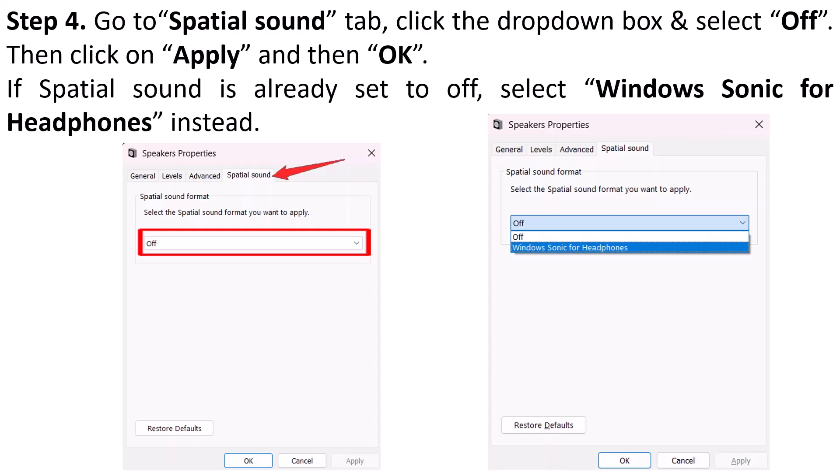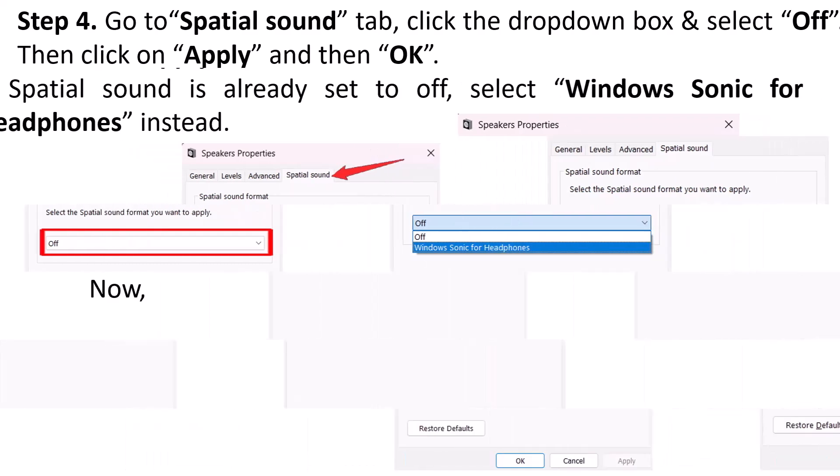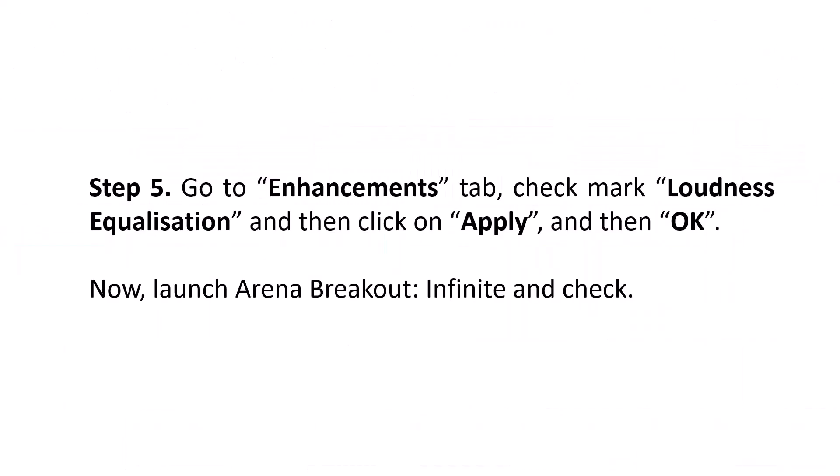If Spatial Sound is already set to Off, select Windows Sonic for Headphones instead. Now go to the Enhancements tab, check mark Loudness Equalization, and then click Apply and then OK. Now you can launch Arena Breakout Infinite and check.